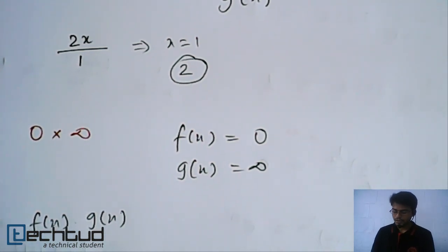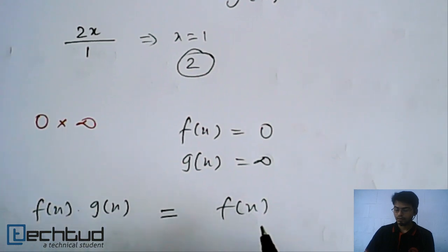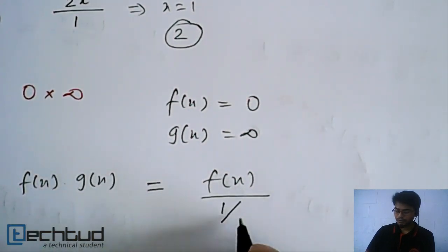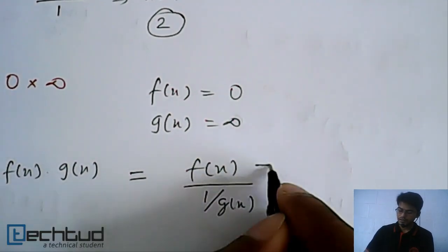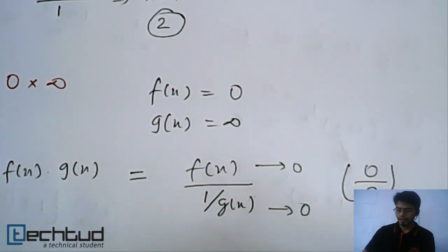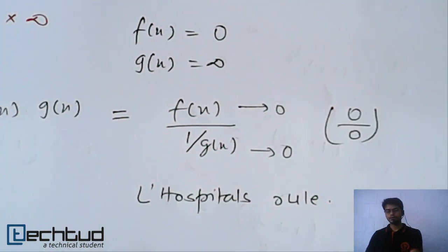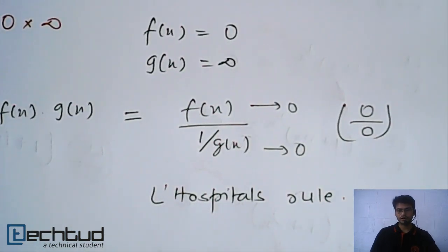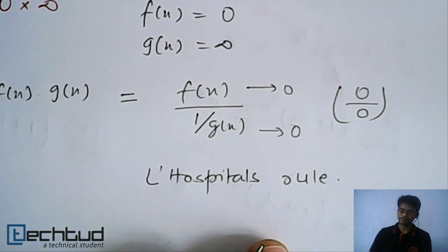So basically this is something which is not determined using L'Hopital's rule. But we can transform it in the form where we can use this rule to identify the limit. So what do we do is, we can write this f(x) into g(x) as f(x) upon 1 upon g(x). Now if you see, this is 0 and this entire term is 0. So now you have transformed this form into 0 by 0 form and you can apply L'Hopital's rule.